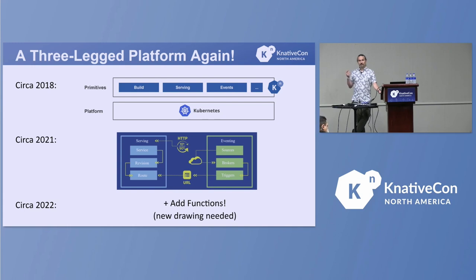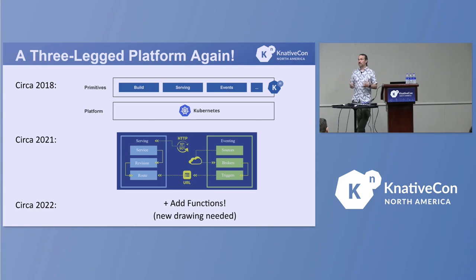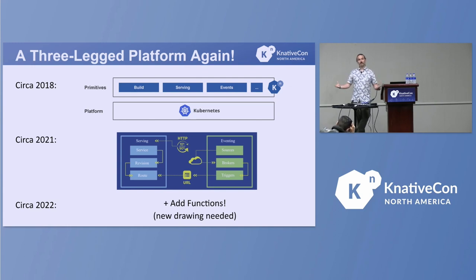It turns out that 'how do I build a container' is actually a bigger, harder problem that ties into how do I build anything. So build grew up and went off to live with the Continuous Delivery Foundation as Tekton, and Knative had two pieces — serving and eventing — until earlier this year when Lance Ball and some folks from Red Hat came into the community.